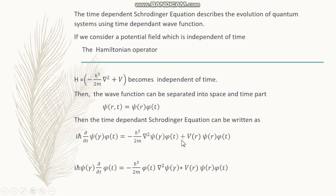On the left-hand side, i h-cross d/dt acting on ψ(r,t) now becomes i h-cross d/dt acting on ψ(r)·φ(t). Since ψ(r) is independent of time, d/dt has nothing to do with that function — it only acts on φ(t).